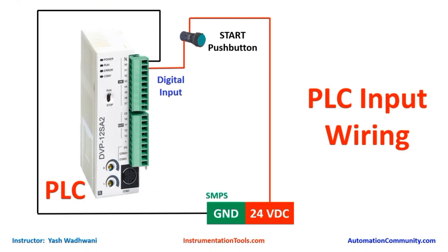Let us understand the wiring requirement for our project. First, let us understand the input circuit. These are our digital inputs in source-sink configuration. First of all, we will connect the ground terminal of our SMPS here. Then 24V DC from the SMPS will be connected to one terminal of our start/stop push button, and its other terminal will connect to the X0 position.